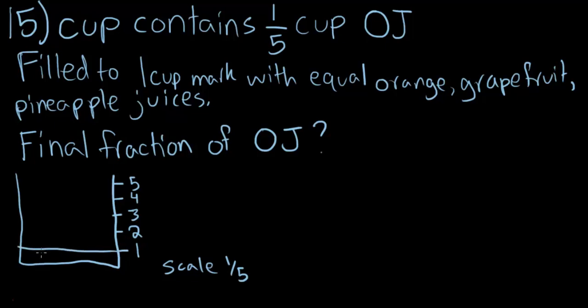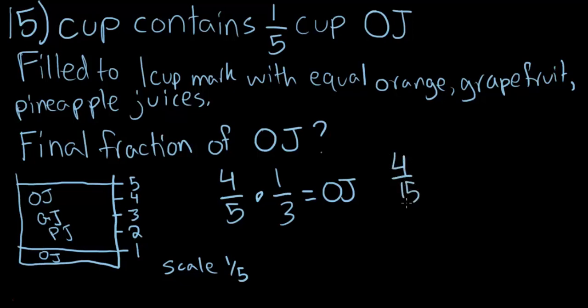So, this fraction is orange juice, and then it is filled up to the one-cup mark, or five-fifths, with orange juice, grapefruit juice, and pineapple juice, all in equal amounts. So, what is the final fraction of orange juice? Well, if they're in equal amounts, and there are three types of juices, then out of that four-fifth cup of juice, one-third of it is orange juice. So, that is four-fifths divided by three, that's the amount of orange juice you add to one-over-five, the amount of orange juice that was already there. So, if we raise this by three, we'll get four-over-fifths.